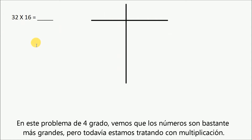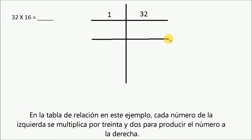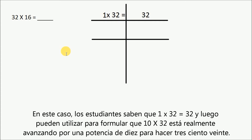In this fourth grade problem, you can see that the numbers are quite larger, but we are still dealing with multiplication. Also, it's important to know that some ratio tables might be based on a word problem, like the last one, but some are simply just used for solving basic numerical problems that don't have any context. In the ratio table in this example, each number at the left is multiplied by 32 to produce the number at the right. Students working with the ratio table use what they know to calculate products they don't know. In this case, students know that 1 times 32 equals 32, and can then use that to formulate that 10 times 32 is really just moving over by 1 power of 10 to make 320.